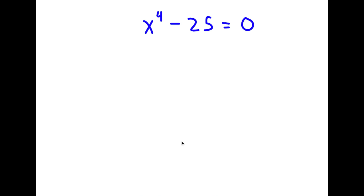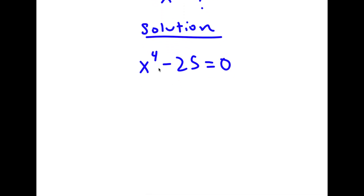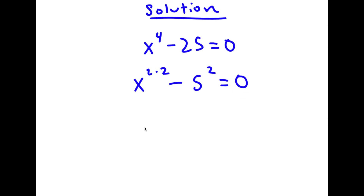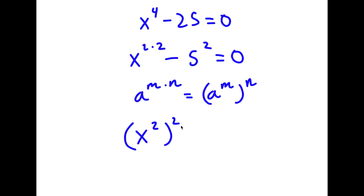In this problem I have x to the power of 4 minus 25 is equal to 0, and I'm going to find the value of x. I'll start by rewriting x to the power of 4 as x to the power of 2 times 2, and rewriting 25 as 5 squared. If I have something in the form a to the power of m times n, this equals a to the power of m to the power of n. So x to the power of 2 times 2 can be rewritten as x squared to the power of 2, giving me x squared to the power of 2 minus 5 squared is equal to 0.